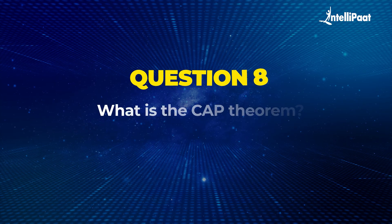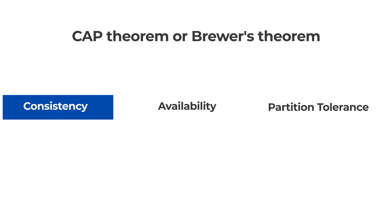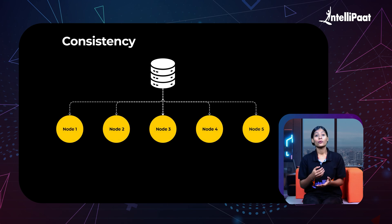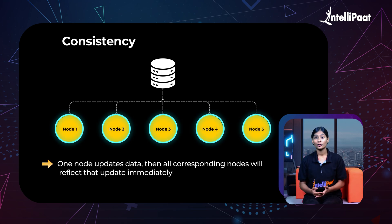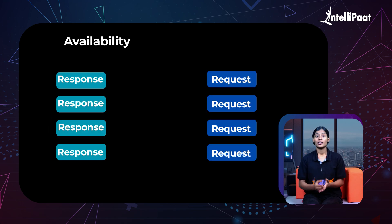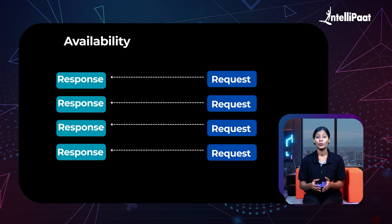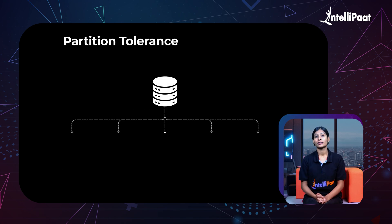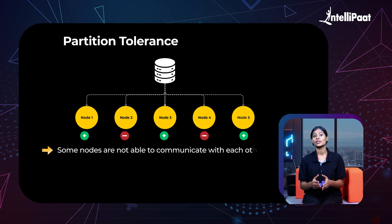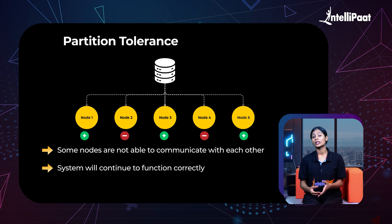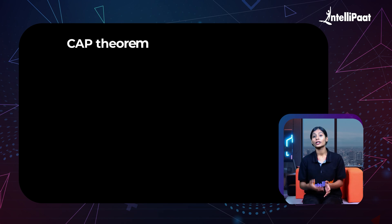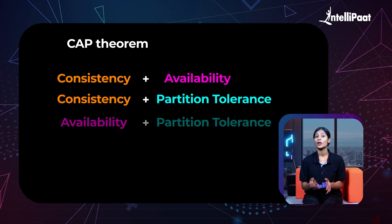Moving on to our next question: what is the CAP theorem? The CAP theorem, or Brewer's theorem, is a fundamental principle stating that at most only two out of consistency, availability, and partition tolerance can be achieved by distributed systems. Consistency means that if one node updates data, all corresponding nodes will reflect that update almost immediately. Availability refers to guaranteeing that every request — be it read or write — will receive a response no matter what, ignoring the possibility of node failure. Partition tolerance highlights that even if there is a network partition where some nodes cannot communicate with each other, the system will continue to function correctly and can handle temporary network failures without crashing. According to the CAP theorem, only one of the combinations — CA, CP, or AP — is possible.